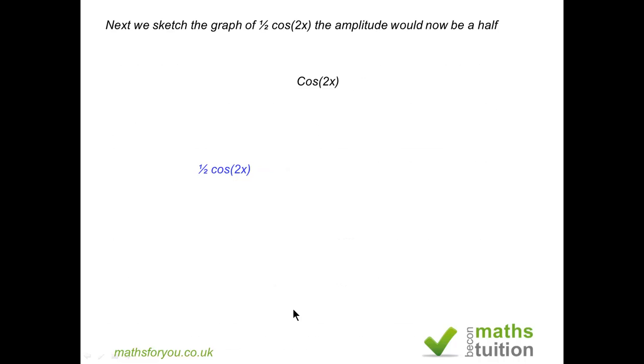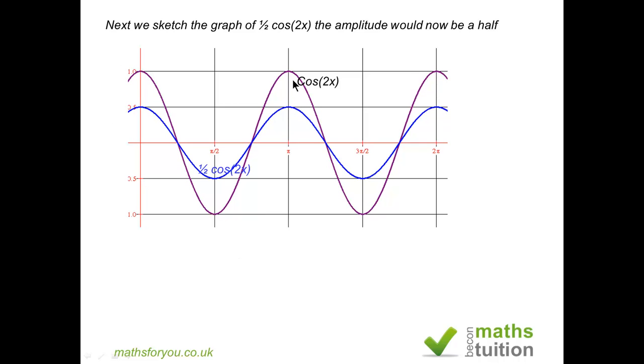Now having done the graph of cos(2x) which has a period of π, we shall now sketch the graph of 1/2 cos(2x). Notice that the period will still be the same, the period is π for both cos(2x) and 1/2 cos(2x). The only difference is that the amplitude for 1/2 cos(2x) is 1/2 whereas the amplitude for cos(2x) is 1.